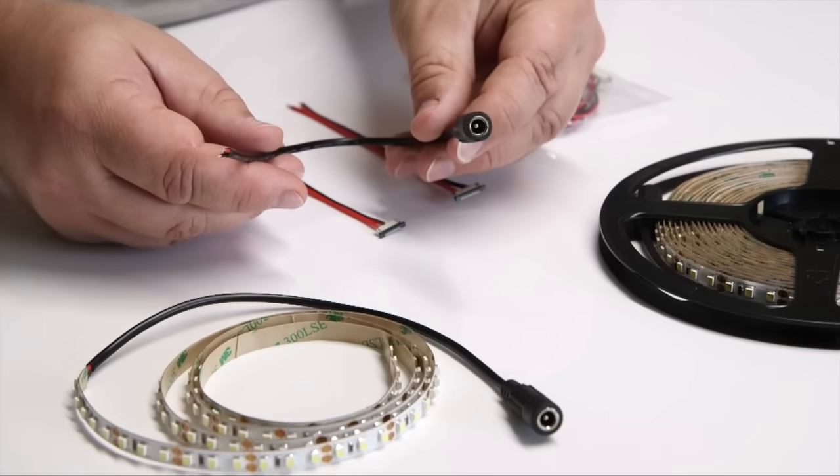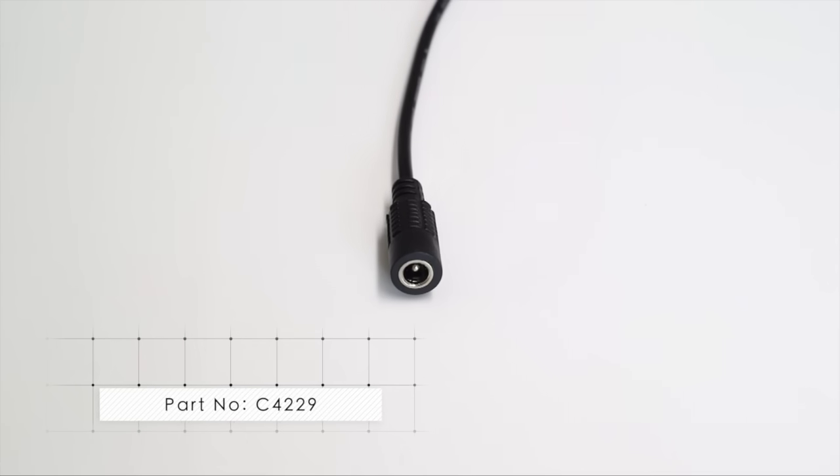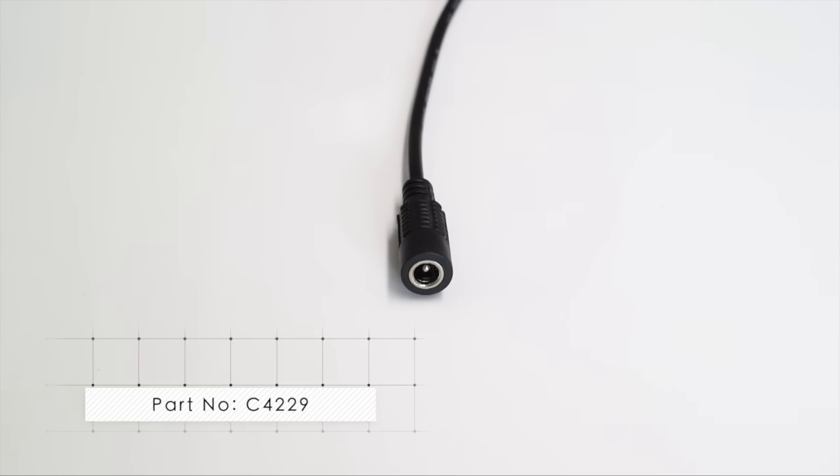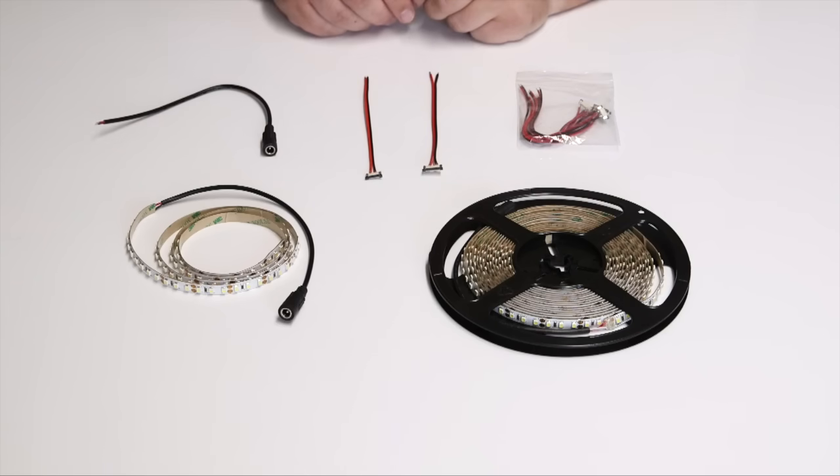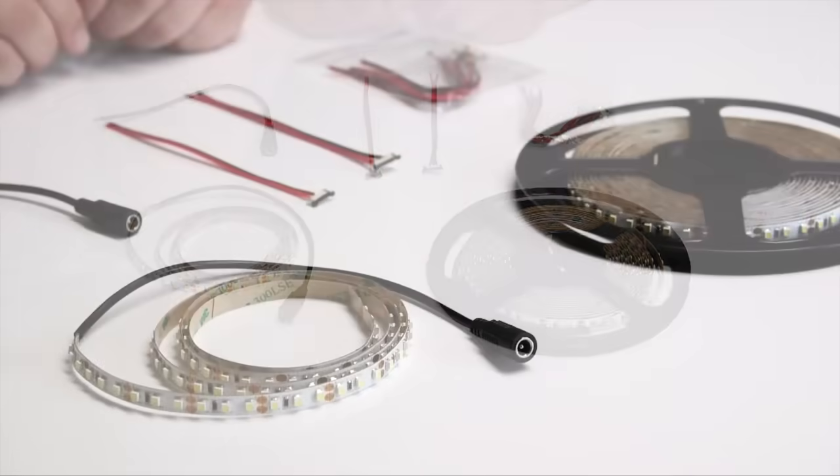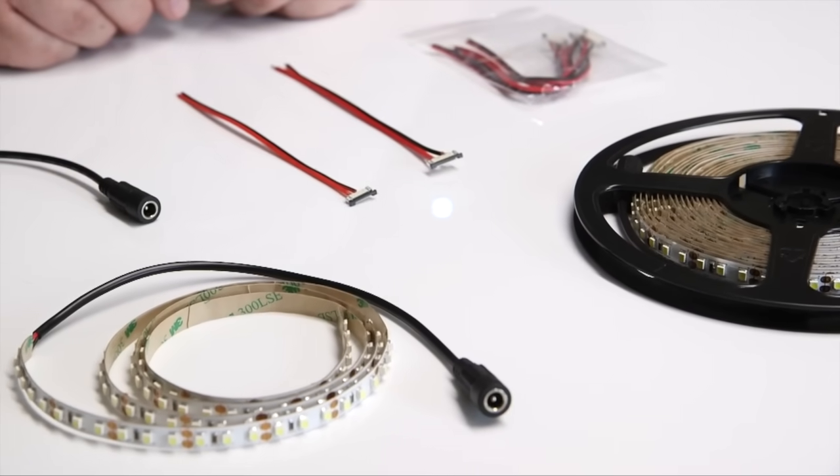This input cable is part number C4229 should you wish to order additional units. If you need to cut down the strip you will need to take steps yourself to be able to power it, as cutting the strip down may remove the pre-fitted C4229 input socket.